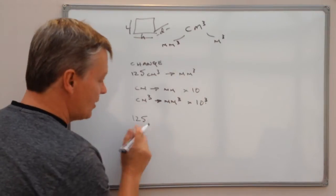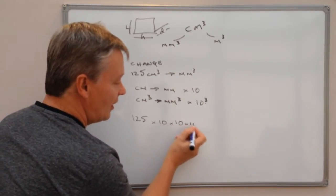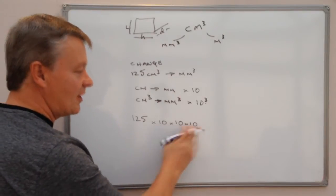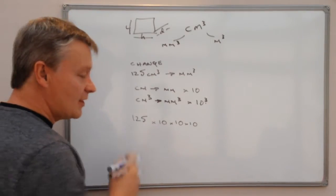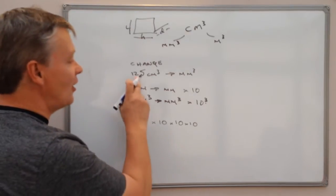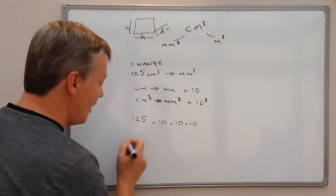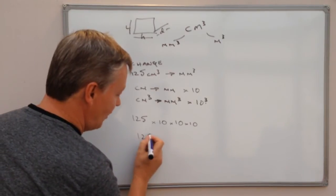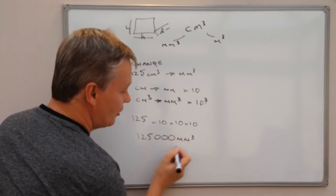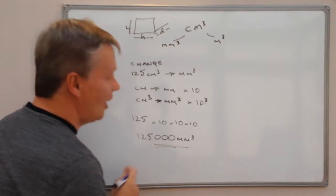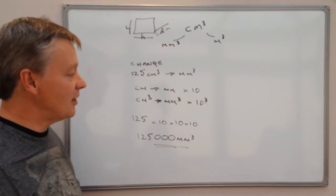So, I'm going to take 125 and convert it to millimeters cubed by multiplying by 10 cubed, which is 10 times 10 times 10 — that's 1,000. That means I add three zeros, so 125 centimeters cubed is actually 125,000 millimeters cubed.